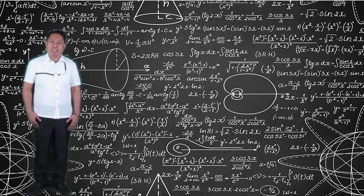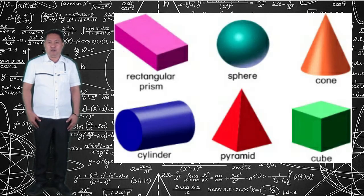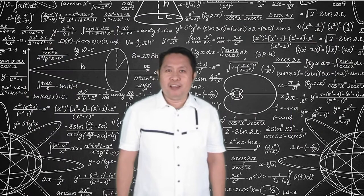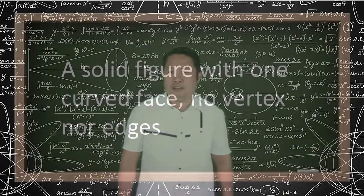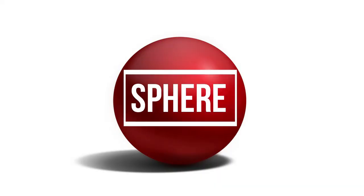Before we proceed to our topic, let us have a review of the previous lesson about solid figures. We are going to identify what kind of solid figure is being described or defined. Are you ready? Let's begin! A solid figure with one curved face, no vertex nor edges. Correct! A sphere.